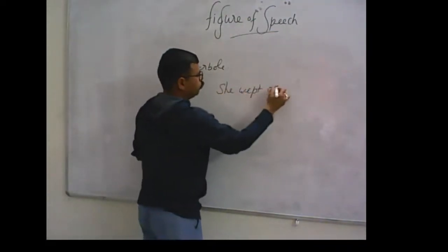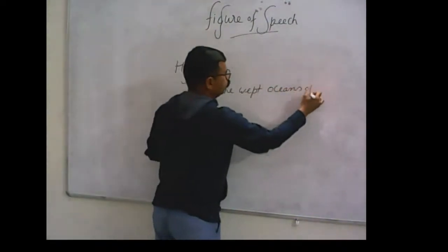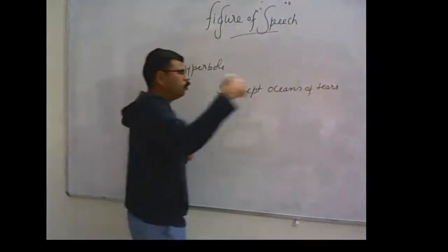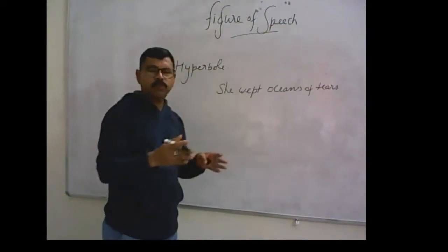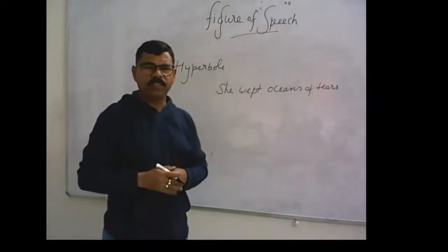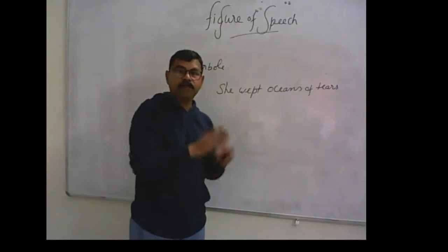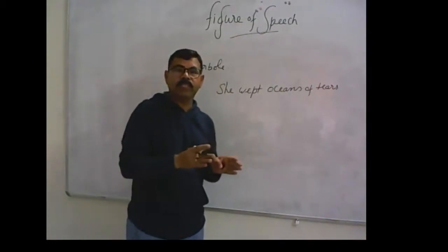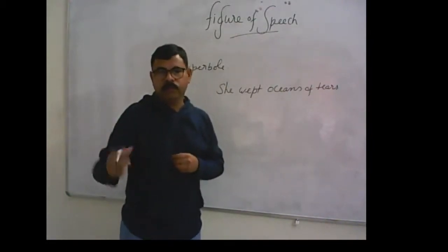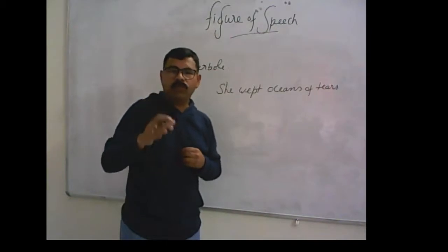For example, she wept oceans of tears. It is never possible. It is the example of exaggeration because we are exaggerating the thing tears. It is never possible.